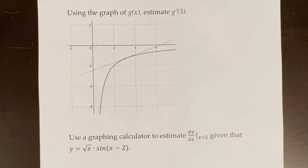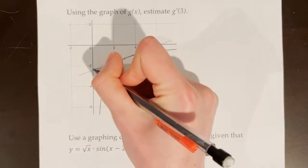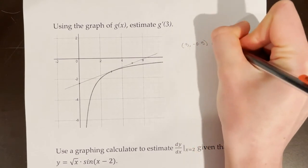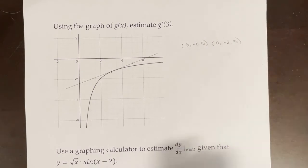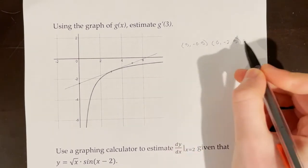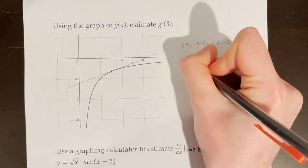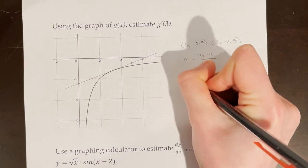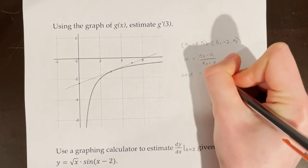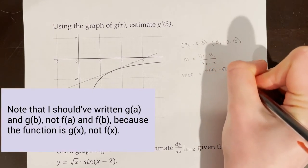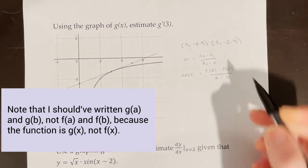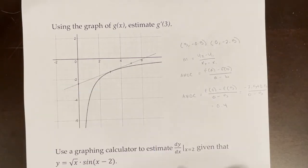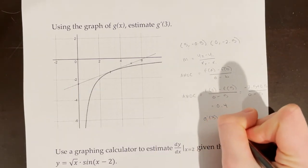Now I can choose two points on that tangent line and find the slope between them. I selected the points 5, negative 0.5, and 0, negative 2.5. Now I'm just going to find the slope between these two points. And when I'm finding the slope between the two points, I can either use the formula m equals y2 minus y1 over x2 minus x1, or I can use the average rate of change is equal to f of a minus f of b all over a minus b. These are the same thing. This means that g prime of 3 is approximately 0.4.